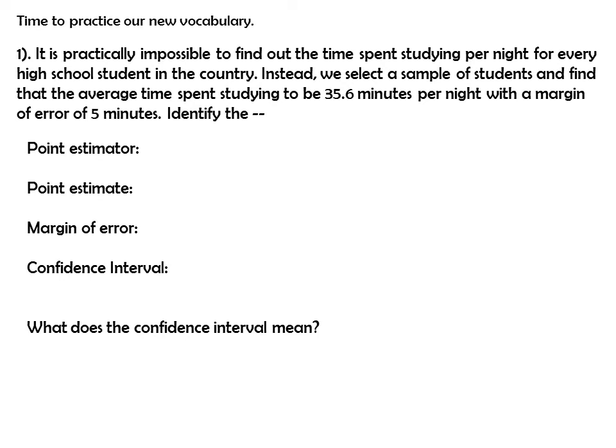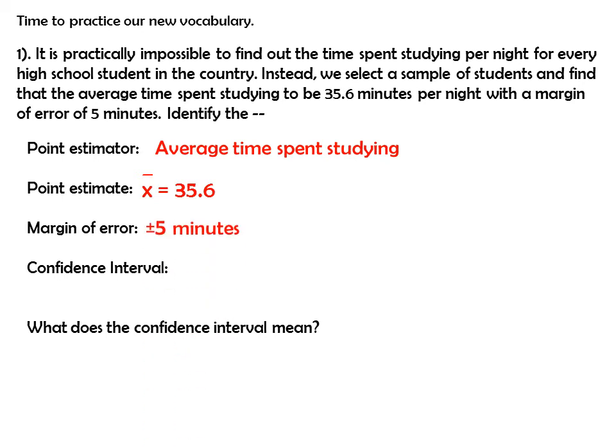Let's practice our new vocab. It is practically impossible to find out the time spent studying per night for every high school student in the country. Instead, we select a sample of students and find that the average time spent studying is 35.6 minutes, with a margin of error of 5 minutes. The point estimator is the average time spent studying, and the point estimate is x-bar equals 35.6. The margin of error is plus or minus 5 minutes, giving us a confidence interval of 30.6 to 40.6.